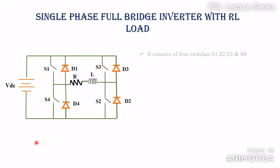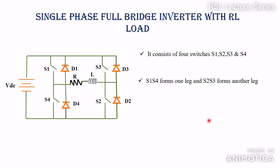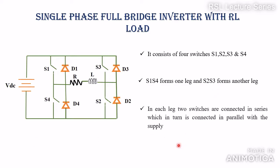So to summarize the topology: it consists of four switches S1, S2, S3, and S4. S1 and S4 form one leg, and S2 and S3 form another leg. These switches in each leg are connected in series, and each leg is connected in parallel with the supply voltage.